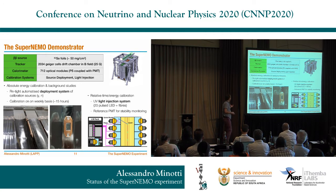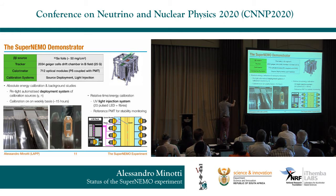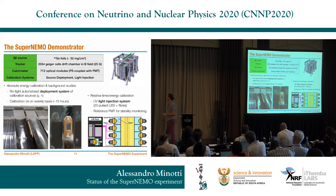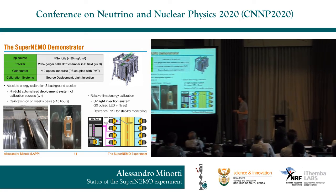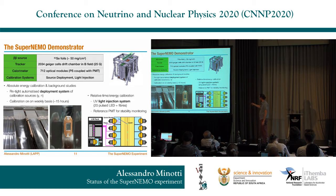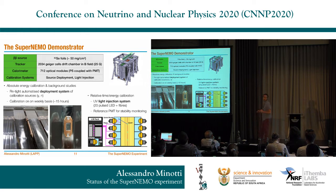There are two calibration systems in the SuperNEMO demonstrator. The first is an automated source deployment system that lowers gamma and neutron sources alongside the source foils to calibrate the detector absolutely in energy and study backgrounds — on a weekly basis for roughly 10–15 hours when running. The second system is a light injection system: LEDs pulse light into every optical module individually via fibers and into reference optical modules, allowing inter-calibration between modules in time and energy, and stability monitoring.